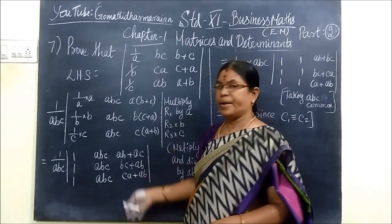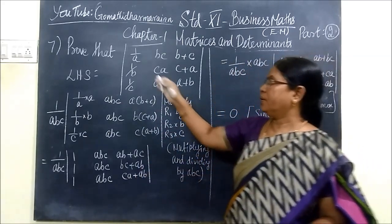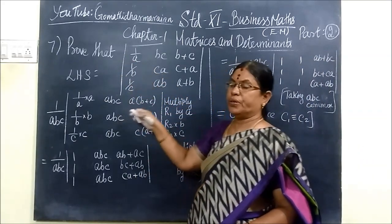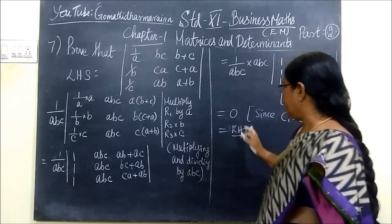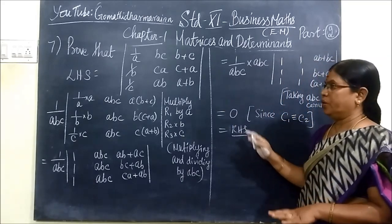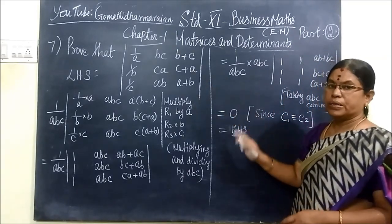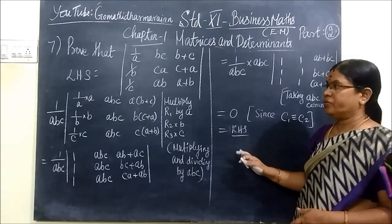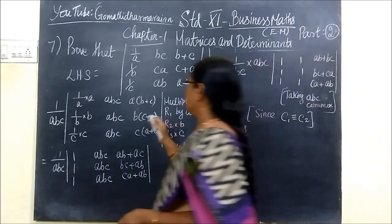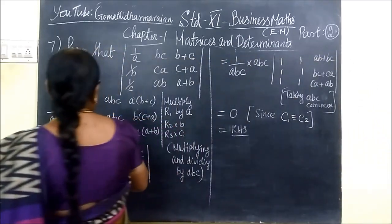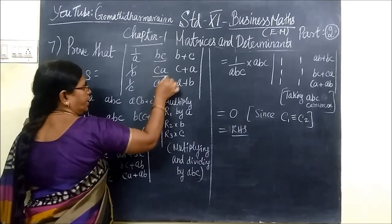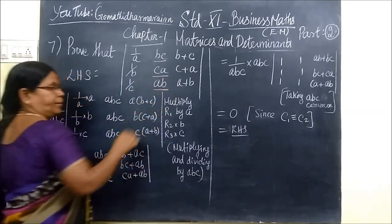Only for time saving I have written this. We have to prove that the determinant value is equal to 0. The whole determinant value is equal to 0. Now considering this: B, C, C, A, A, B.